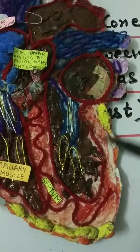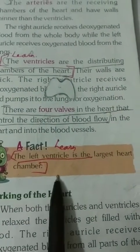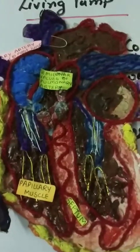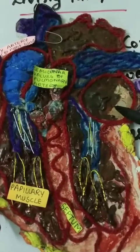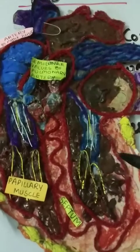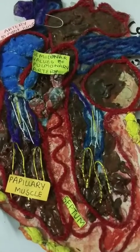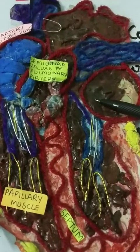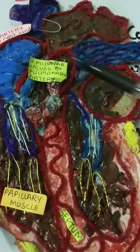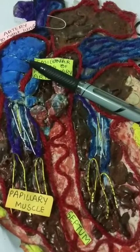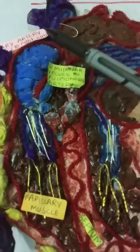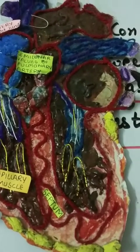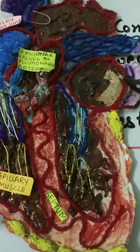Working of the heart: When both auricles and ventricles are relaxed, the auricles keep filling with blood. The right auricle receives deoxygenated blood from all parts of the body, and the left auricle receives oxygenated blood from the lungs through the pulmonary veins.